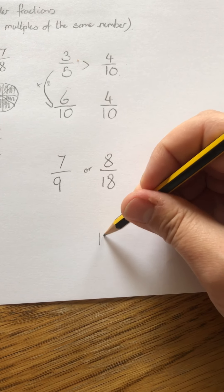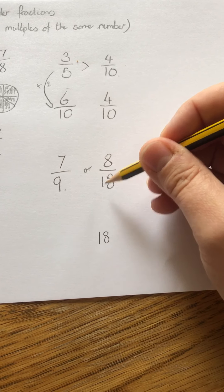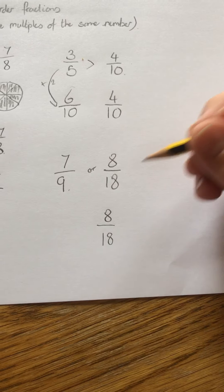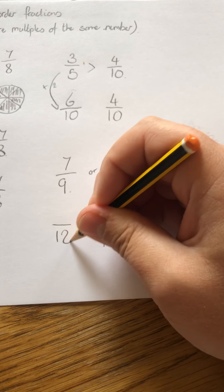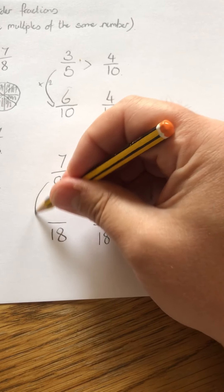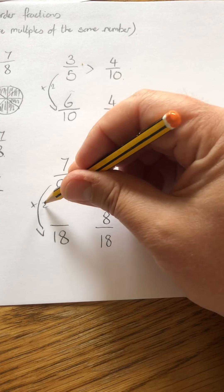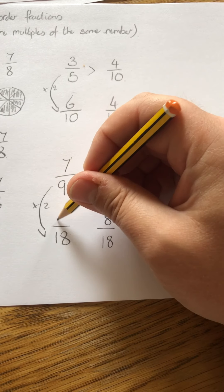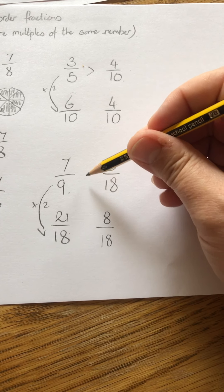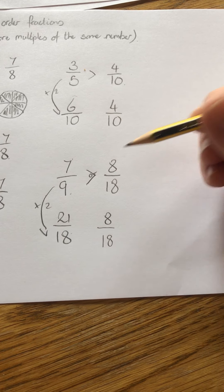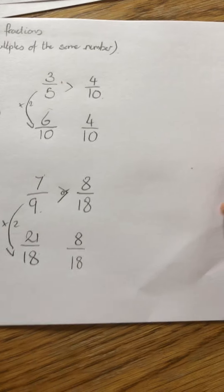So I can keep my eighteen because nine goes into eighteen. How many times? That's twice. Nine times two is eighteen. Seven times two is fourteen. Fourteen is bigger than eight. So this is a bigger fraction. Seven ninths is bigger than eight eighteenths.